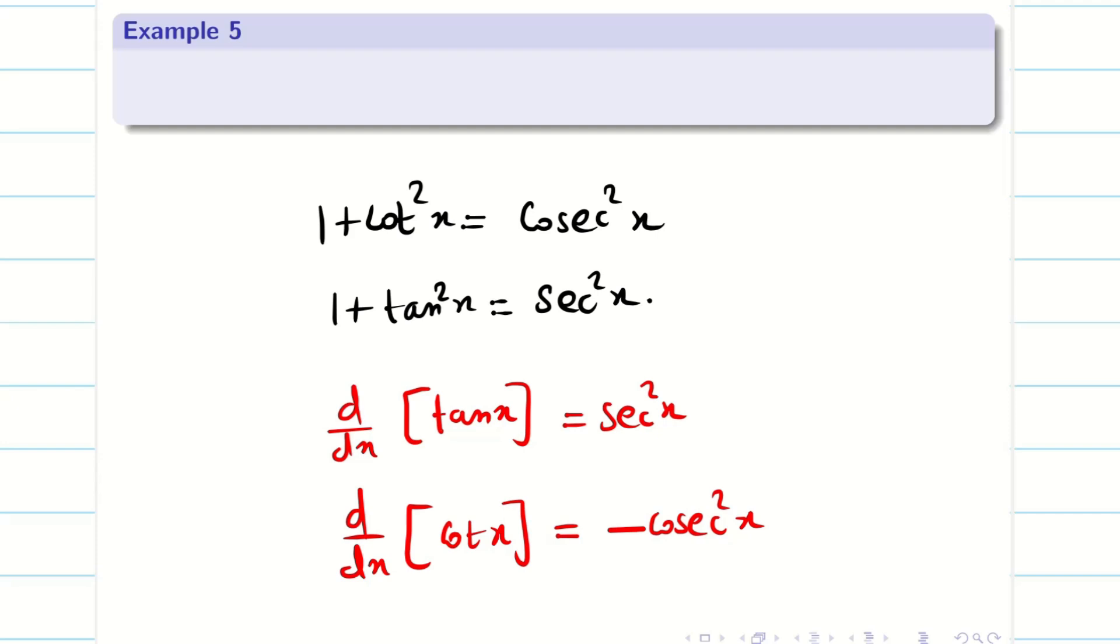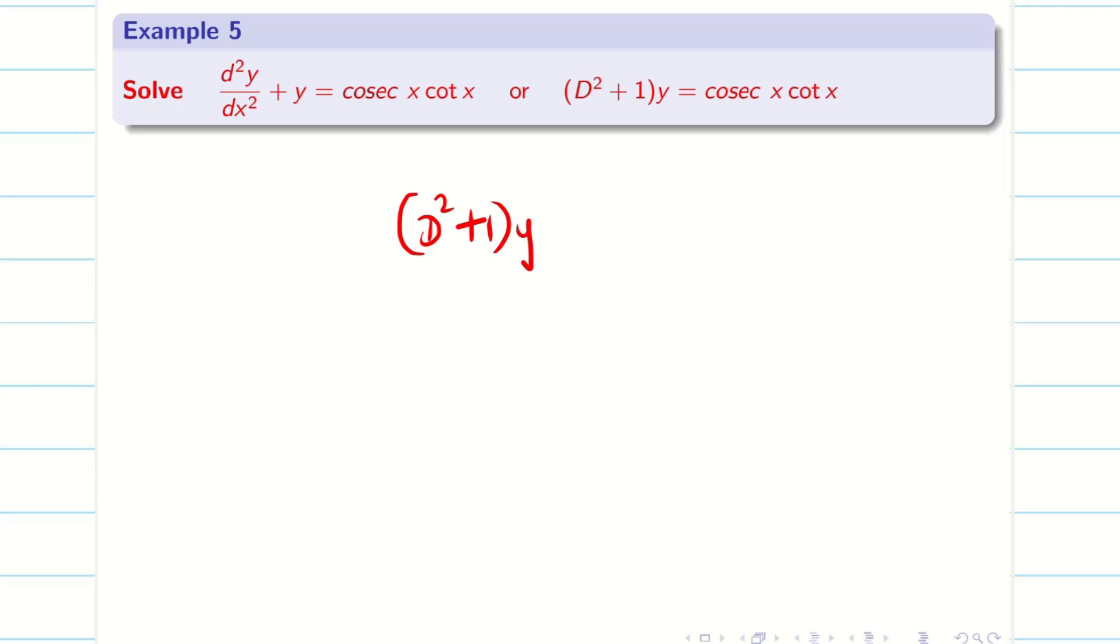Now let us go into the problem. Let us consider d² + 1 into y equals cosecant x cot x. In all our previous sessions we dealt with d² + a² into y equals a single function on the right hand side. Now we are dealing with two functions on the right hand side: cosecant x into cot x. Since we have d² + 1, we can directly solve. Let us see the steps one by one.